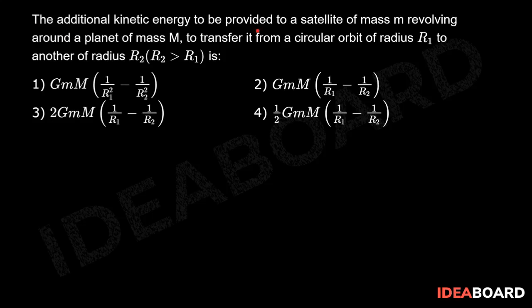The additional kinetic energy to be provided to a satellite of mass m revolving around a planet of mass M, to transfer it from a circular orbit of radius R1 to another of radius R2 (R2 greater than R1) is: